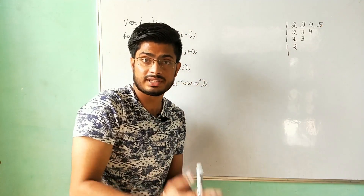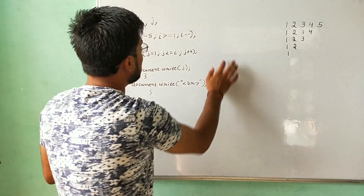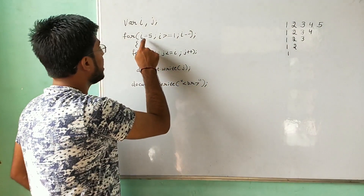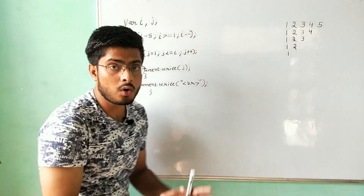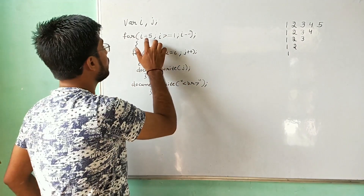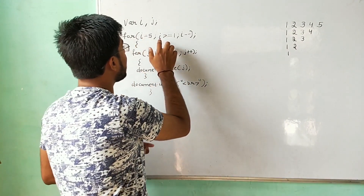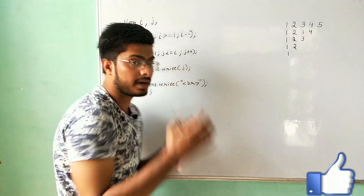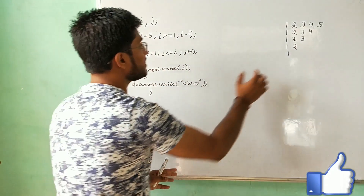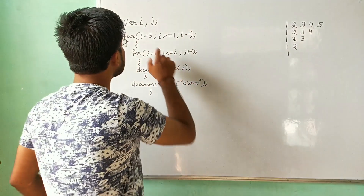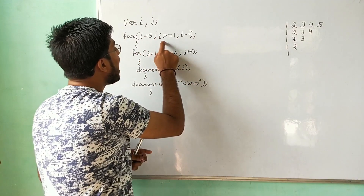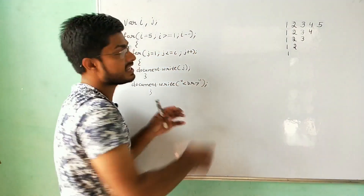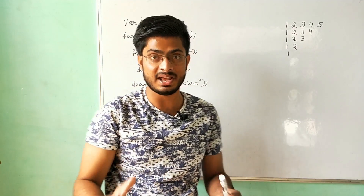Let us see the working of this program. So this is the program for that pattern. In our previous lecture we had i value starting at one, but now we have i value five. In our previous lecture we had the condition i less than or equals to five and i plus plus, but here it is totally opposite because the pattern is totally opposite. So here we have i equals to five, i greater than or equals to one, and i minus minus in place of i plus plus.